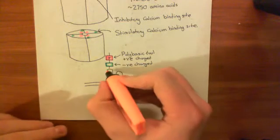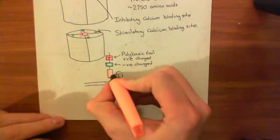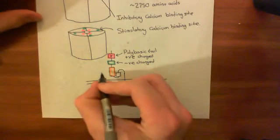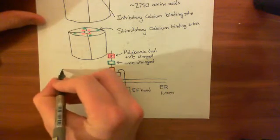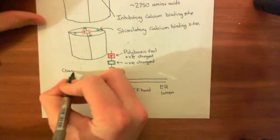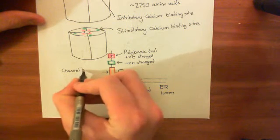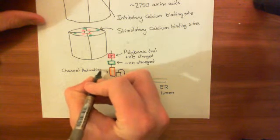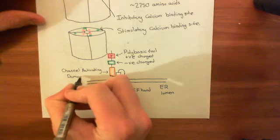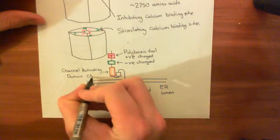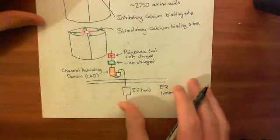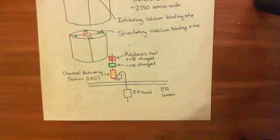The next domain down is really important. This is called the channel-activating domain, or CAD for short. That's the portion that is going to actually interact with the calcium channel in the plasma membrane and cause it to open.